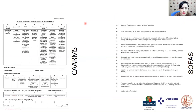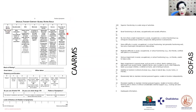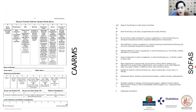This is just an example from the CAARMS, which is quite long — about two hours of assessment. Here you can see one of the symptoms: unusual thought content. You score it from zero, meaning no symptoms at all, up to six when the subject is already psychotic. Then we score the frequency and duration of the symptoms, whether symptoms are related to drugs, and the level of distress for the subject. There is also the SOFAS scale, which is quite useful to measure the social functioning of subjects.